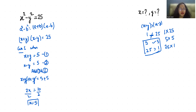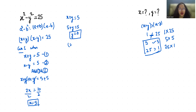Now substitute x equals 5 into equation 1: x plus y equals 5, so 5 plus y equals 5, which gives y equals 0. So in case one, x equals 5 and y equals 0.